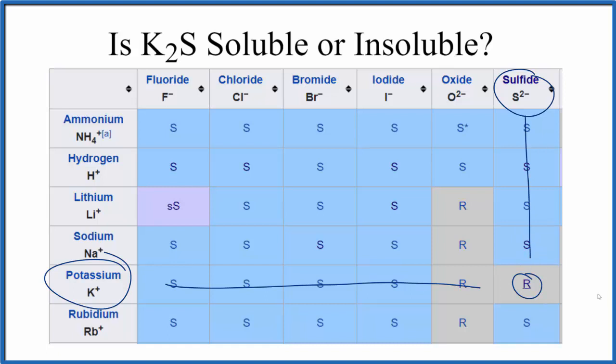R means that it reacts. The thing is that when it reacts, when we have this reaction take place, both of the products are soluble. So we end up with, effectively, this potassium sulfide being soluble in water.